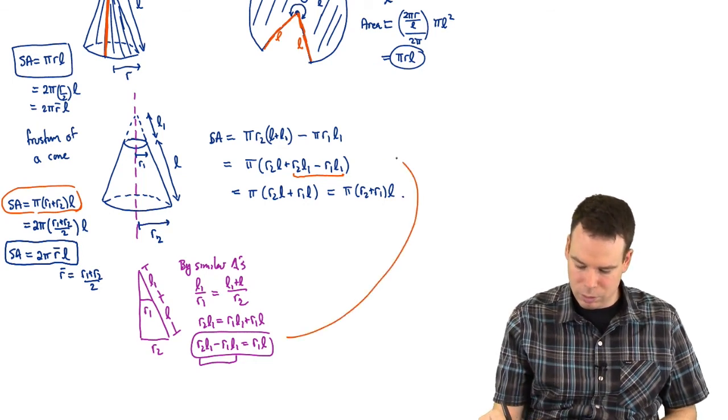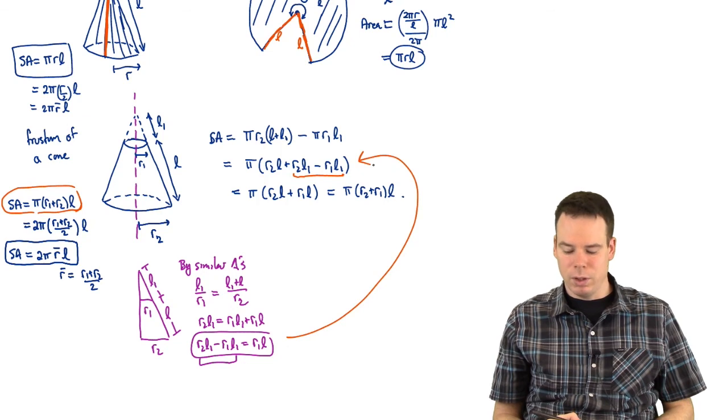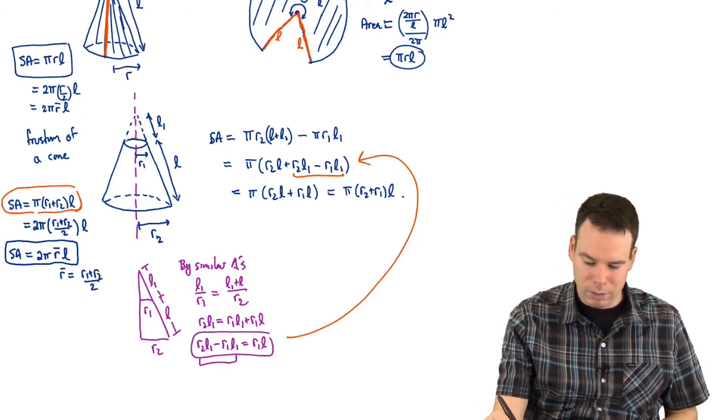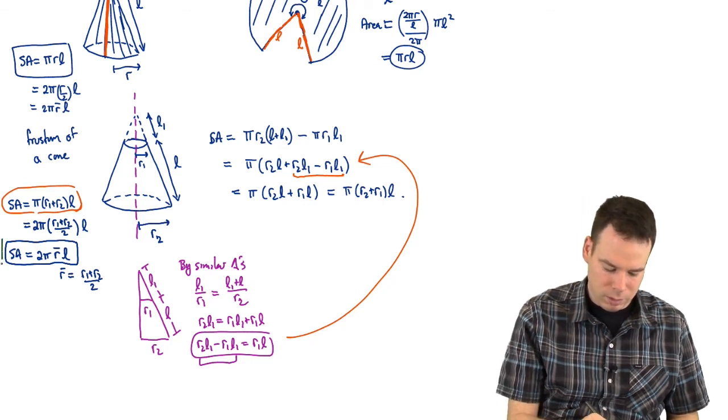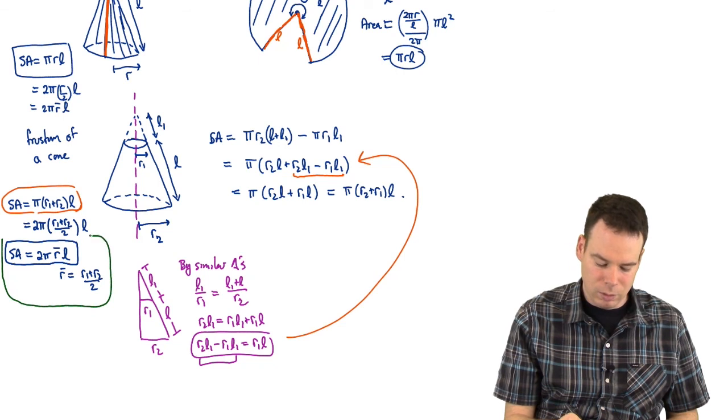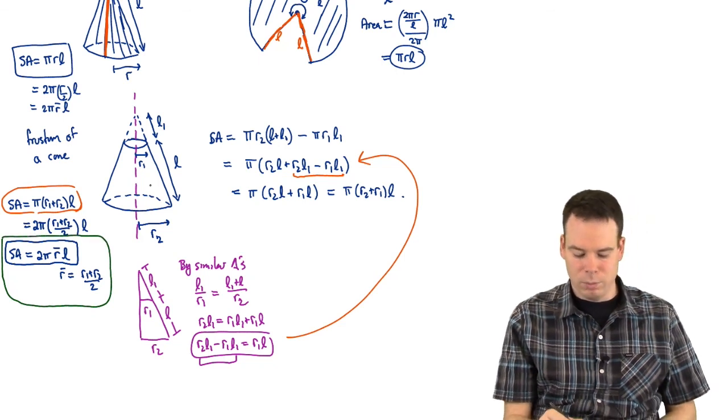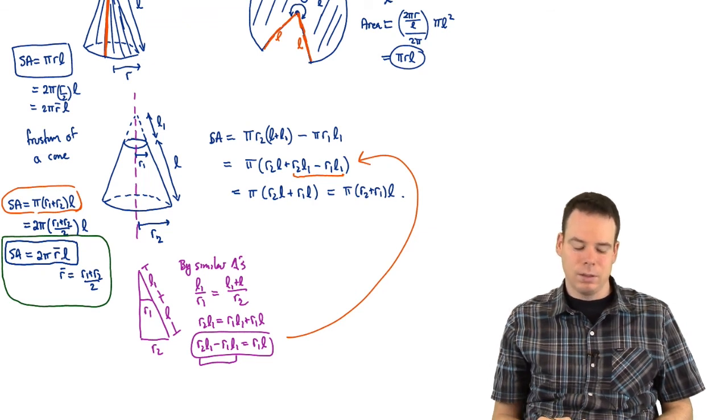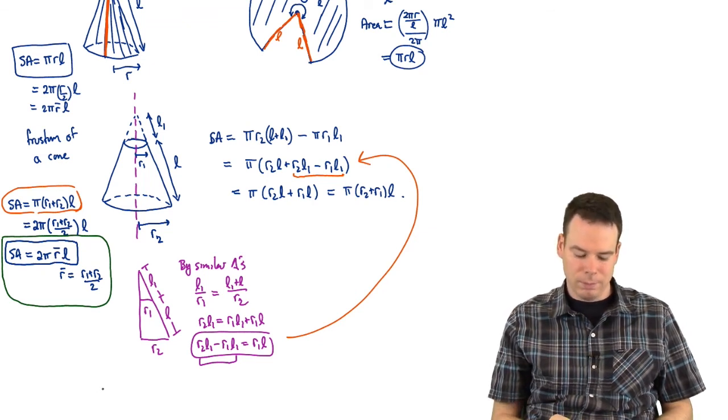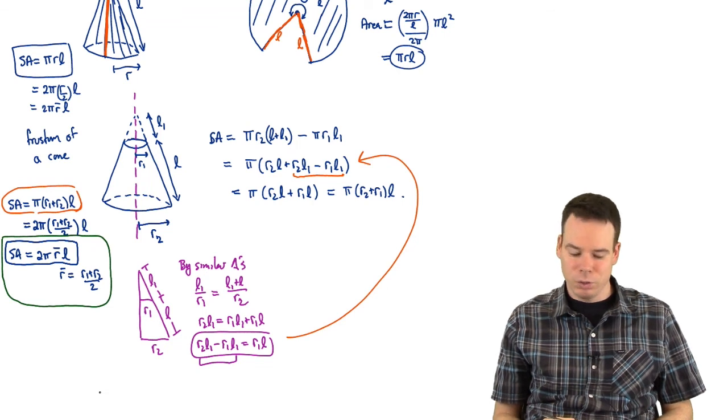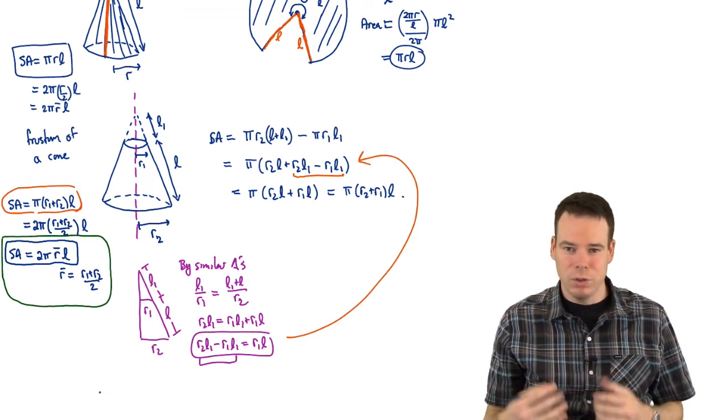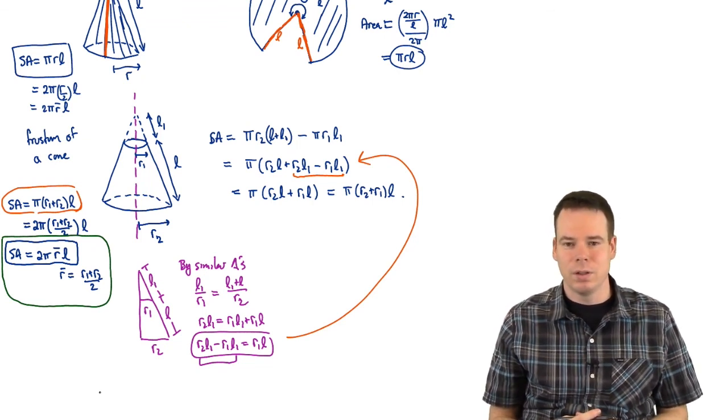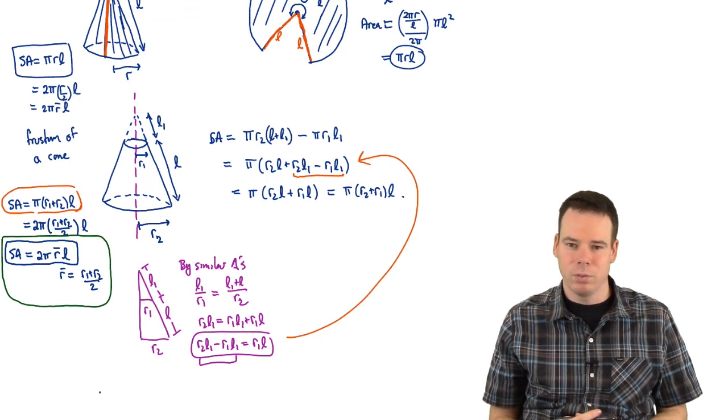So we use this expression, similar triangles, to make that reduction. And that's exactly what we wanted to show. That was our surface area. But of course, as I mentioned before, the way you really want to think about this, and the way we're going to be using it, is to think about the surface area of an object like this as 2π times the average radius times the side length. 2π times the average radius times the side length. So those were the formulas that I wanted to derive for you because we're going to be using them in coming up with our integral representation for the surface areas of general surfaces of revolution.